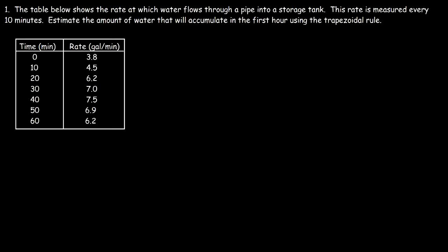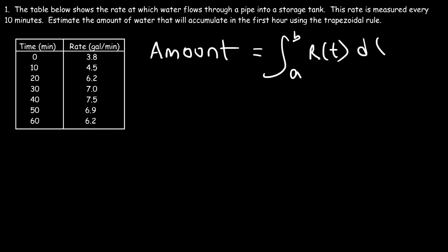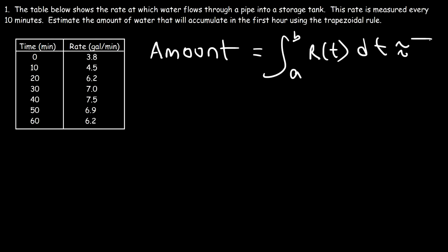Let's work on a word problem. The table below shows the rate at which water flows through a pipe into a storage tank, measured every 10 minutes. Estimate the amount of water that will accumulate in the first hour using the trapezoidal rule. This is an accumulation problem: the amount accumulated equals the definite integral of the flow rate r(t) dt. We have 7 points and 6 intervals, so this is T₆ with n equal to 6.